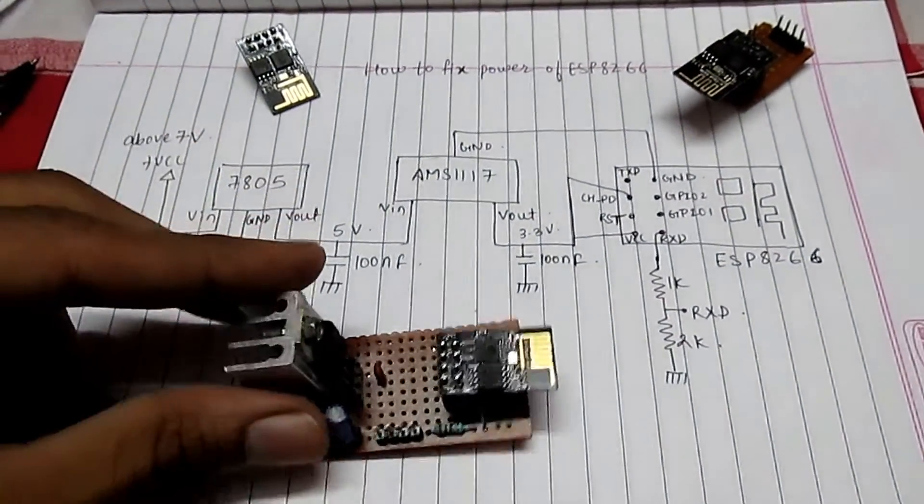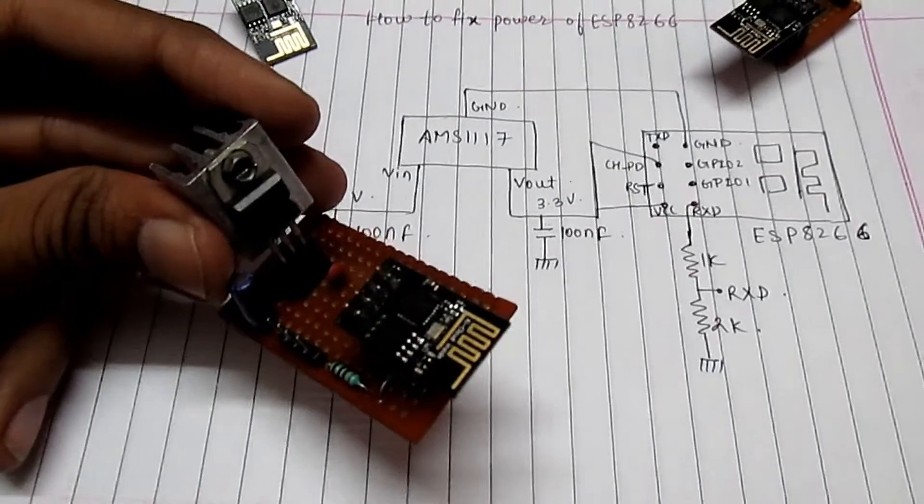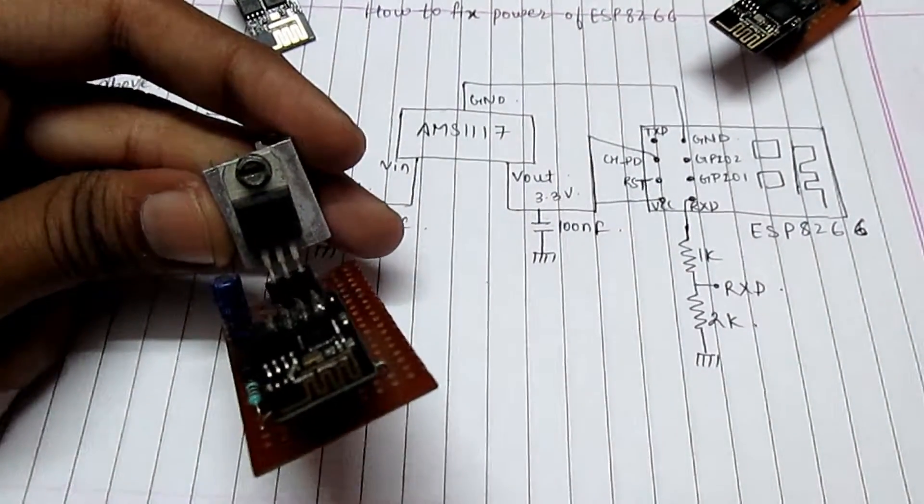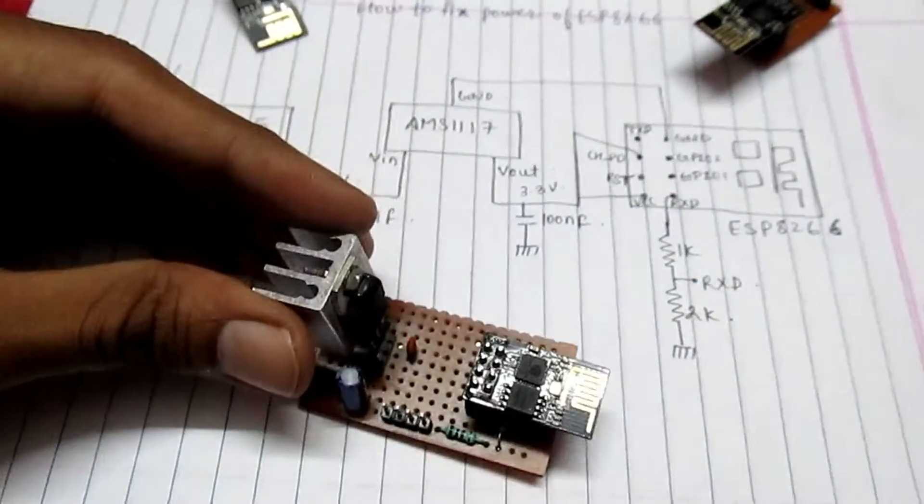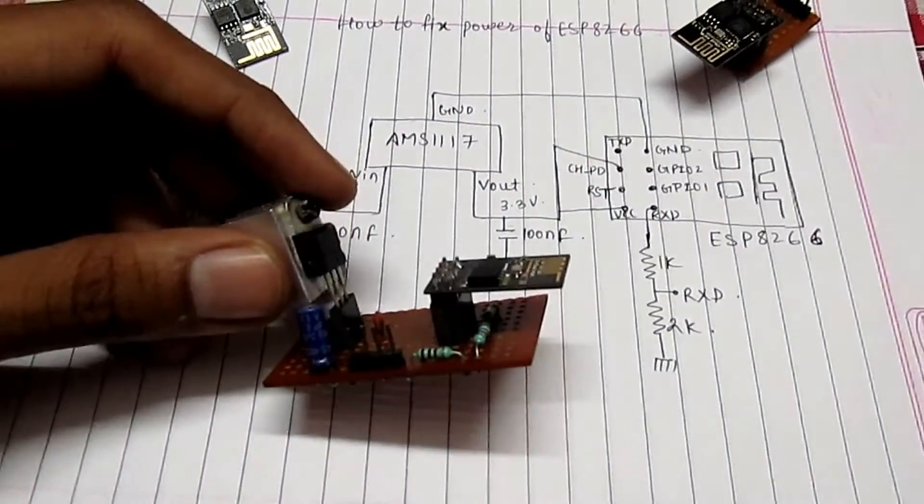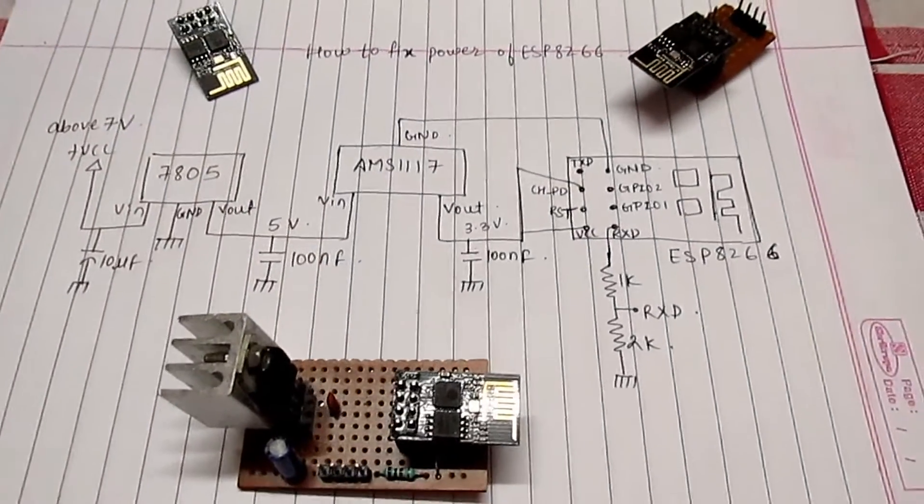Let's have a look at the module that I had made. As you can see: ESP8266, 7805, AMS117, capacitors and some resistors.